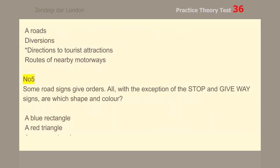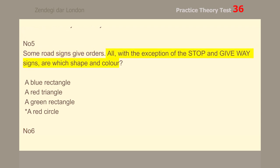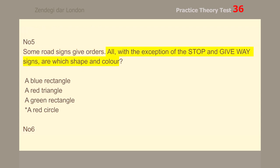Number 5. Some road signs give orders. All, with the exception of the stop and give way signs, are which shape and color? A red circle.